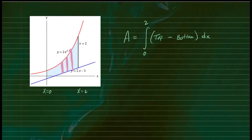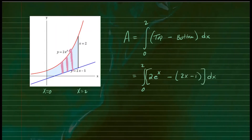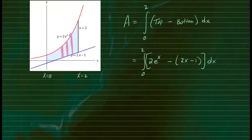Since our rectangles are vertical, the top curve is the one in red, and the bottom curve is the one in blue. So we're integrating from 0 to 2 of the top curve, which is 2 times e to the x, minus the bottom curve, which is 2x minus 1, dx. That's the integral setup for this example, and now we proceed to integrate.